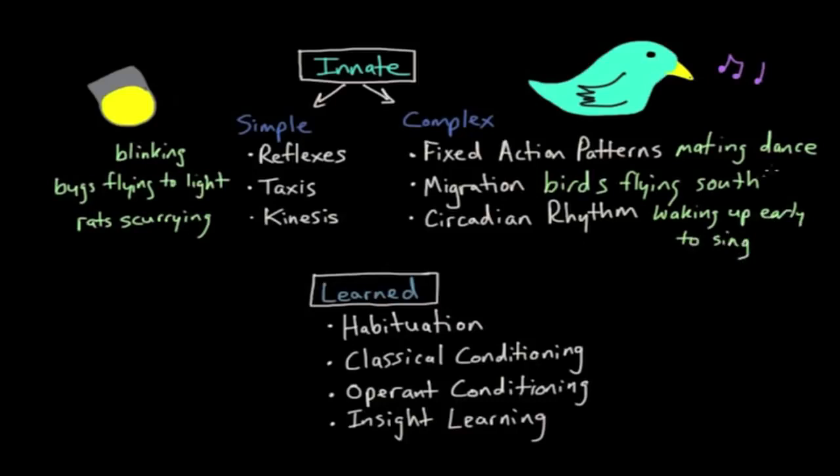These are the most common innate behaviors. A learned behavior is a behavior that's acquired through experience. The most common types of learned behaviors are habituation, classical conditioning, operant conditioning, and insight learning.